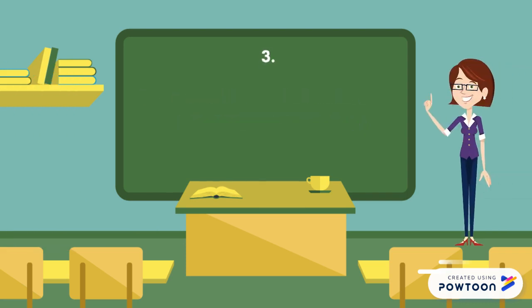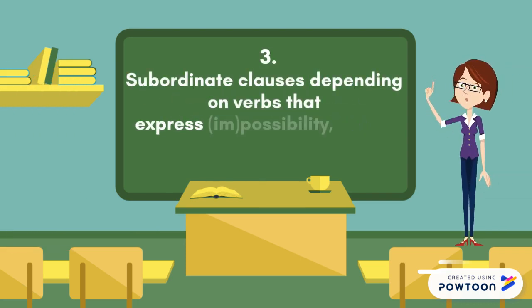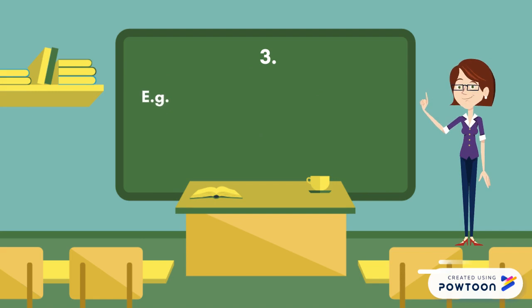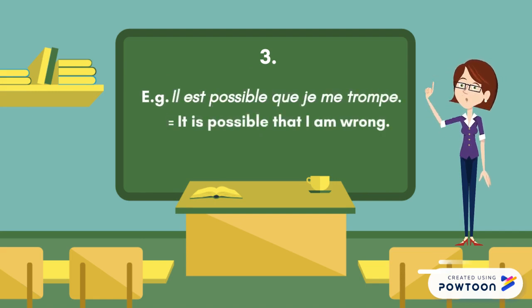The subjunctive is used in subordinate clauses depending on verbs that express possibility, impossibility, or doubt. For instance: 'il est possible que je me trompe' — it is possible that I am wrong.